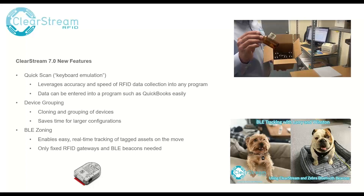One of the coolest features for version 7 is BLE zoning, which enables easy real-time tracking of tagged assets on the move. We made a video — if you haven't seen it, go to our Clearstream YouTube channel to check out our latest BLE tracking video where we had some of our dogs in the office being tracked as they moved throughout our offices. With BLE zone tracking, you get real-time data collection showing where something is in a facility based on a zone. I'm going to show you a configured project and walk through the offices with one of the beacons.